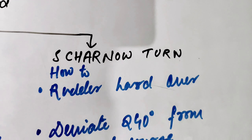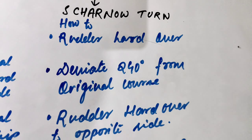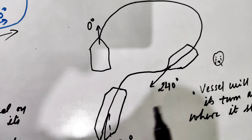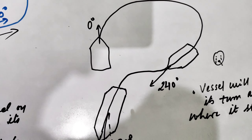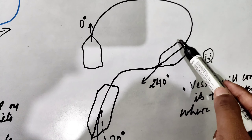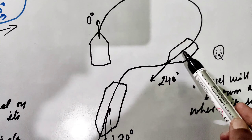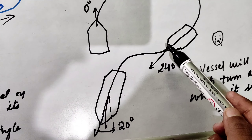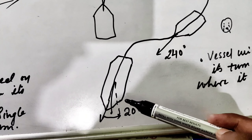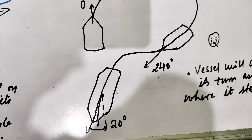For the Scharnow turn: rudder hard over — there is no specification about which side of the casualty. Deviate 240 degrees from the original course. After this deviation, put the rudder hard over to the opposite side. When the heading is 20 degrees from the reciprocal course, rudder amidship and steady on the reciprocal course.